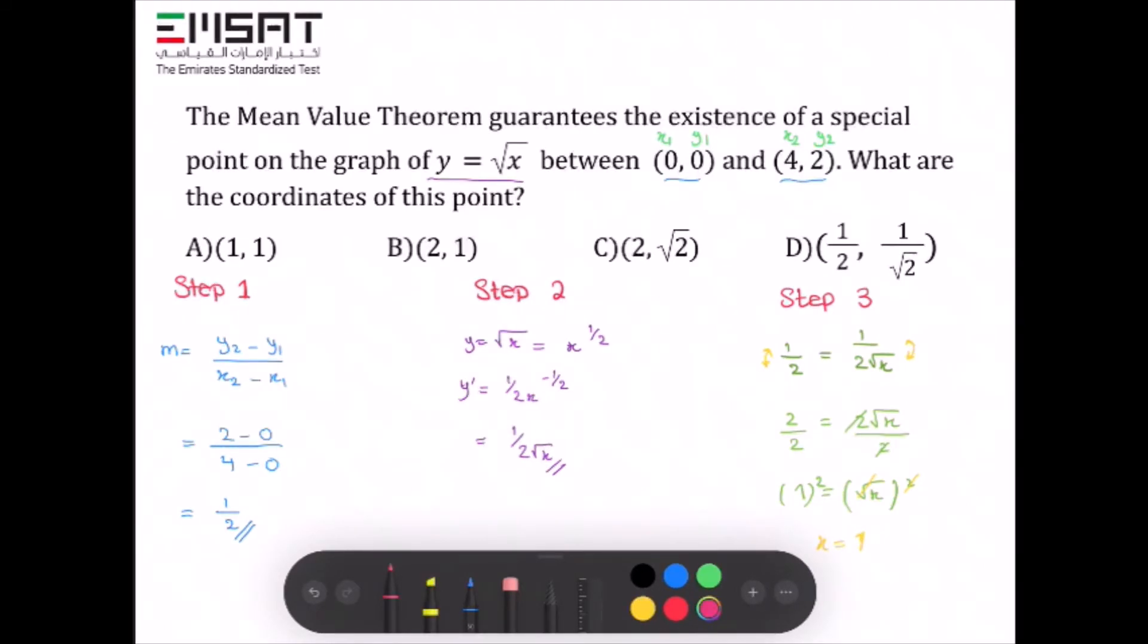The correct answer is option A, because x = 1 and y = 1. Options B and C are incorrect because they have x = 2. Option D is incorrect because it has x = 1/2.